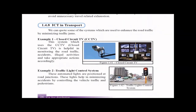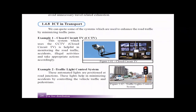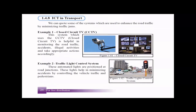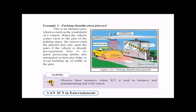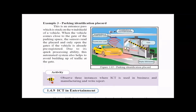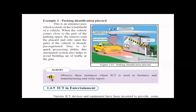ICT in transport: CCTVs allow monitoring of traffic, accidents, and illegal activities. Traffic lights in most Colombo areas are automated, with timing controlled based on traffic patterns. Parking identification systems work as entrance passes — sensors at the gate identify whether a vehicle is registered and automatically open the gate, with no need for a separate security guard.